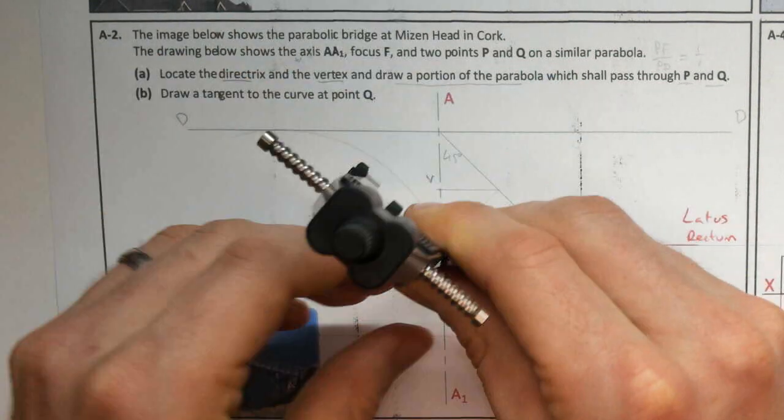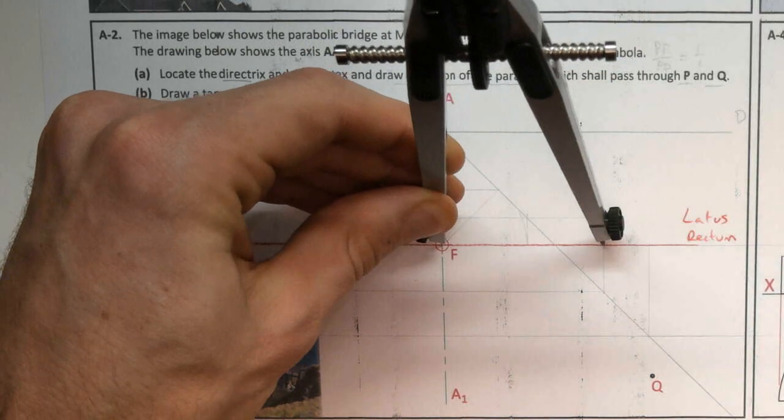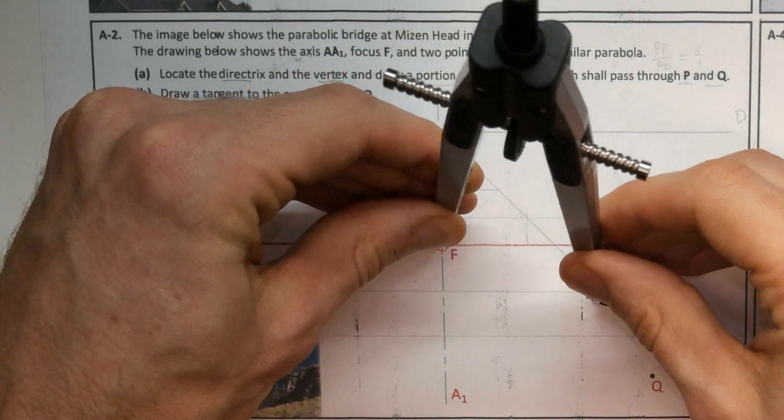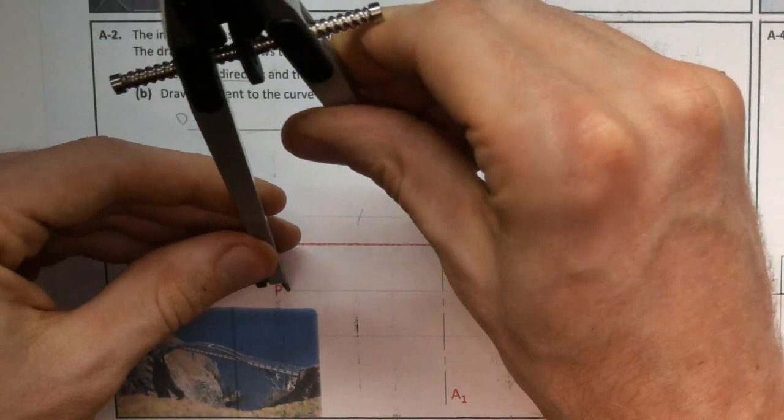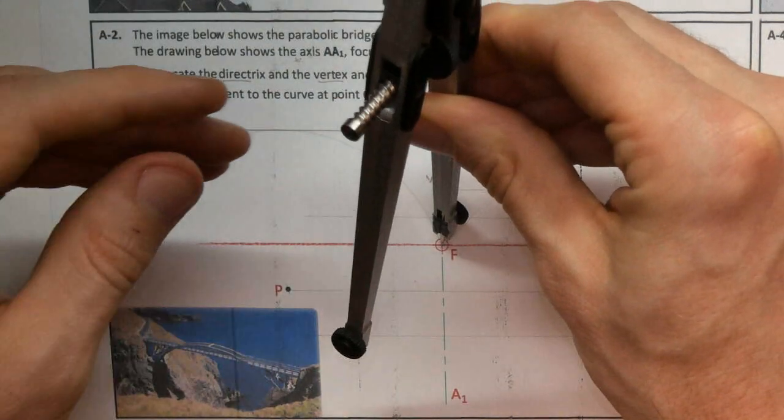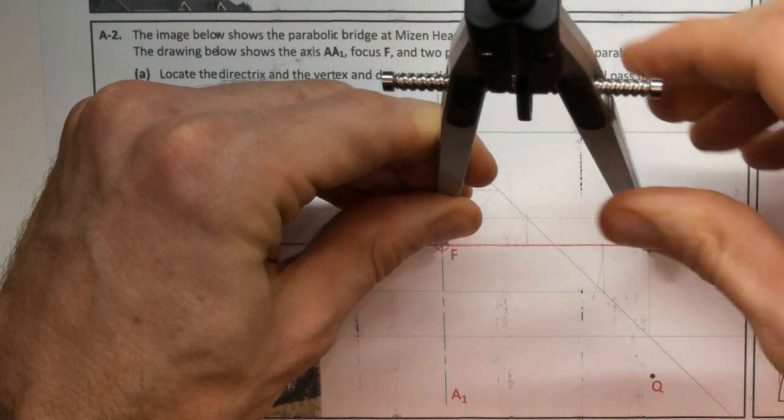While I have it, swing that. And over to the next distance where it hits the latus rectum, swing it down onto the nice side. And that should give me point P there as well. It does. And then there.